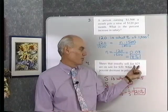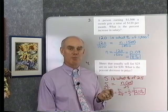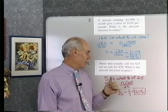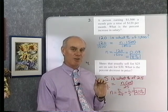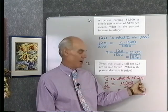So if a pair of shoes normally sells for $25, and they're on sale for $20, then they decreased in price $5. That's the discount. So then I want to know what percent of the original price is that. So I say 5 is what percent of 25?